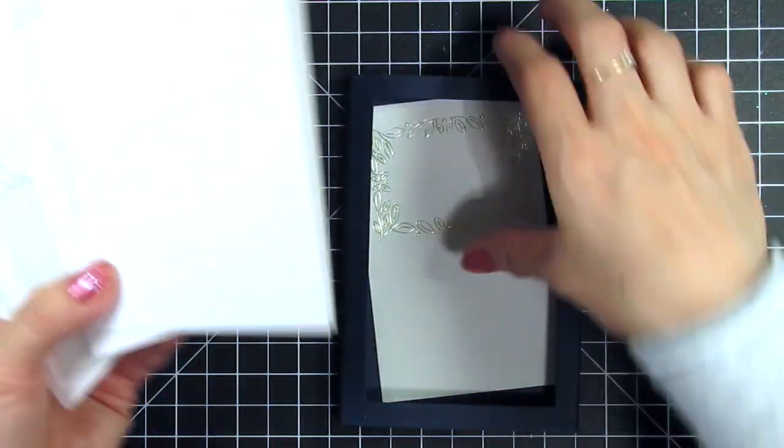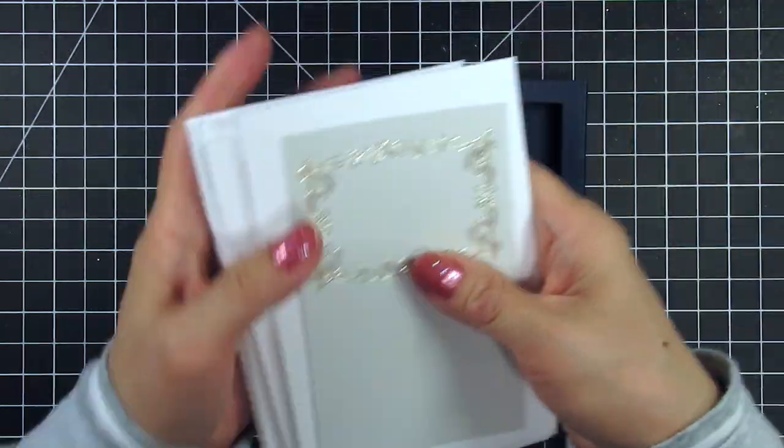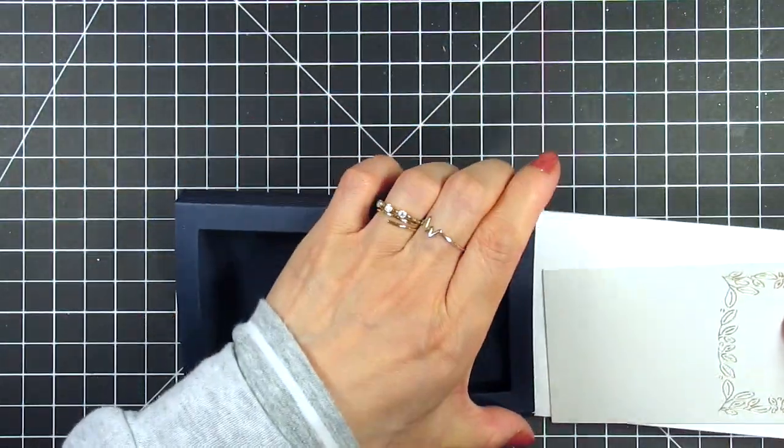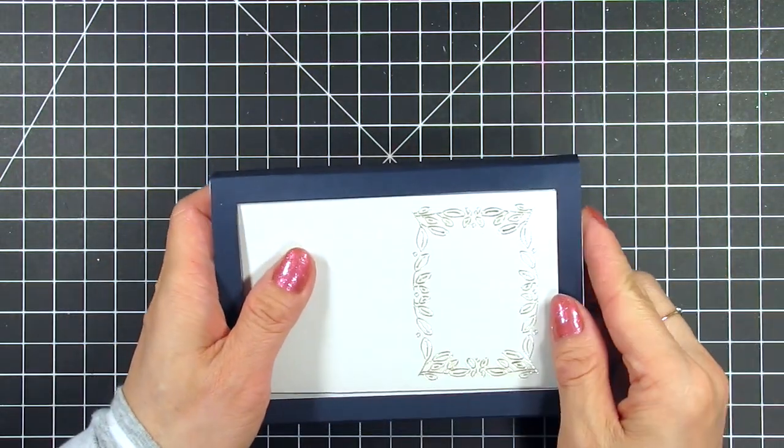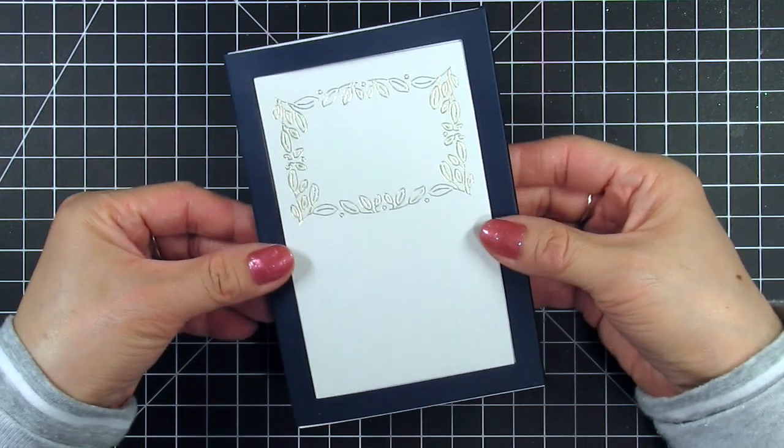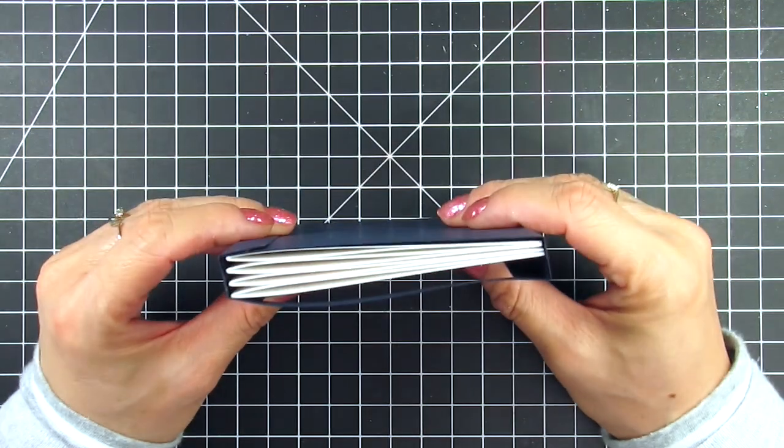Later I decided not to do this since the shadow box was able to accommodate not four but five cards. If your cards are less embellished then you could probably fit six or seven cards in it. These card bases measure three and five eighths of an inch by five and a half inches.